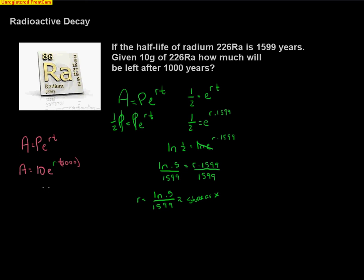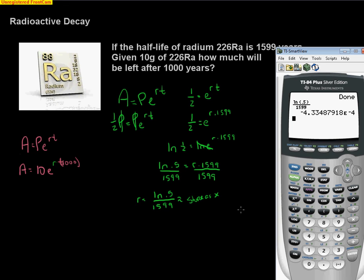I go back to my calculator and I'm going to take that number I just did here. I'm going to store it using the STO button right to the left of the one, store that as x and hit enter.